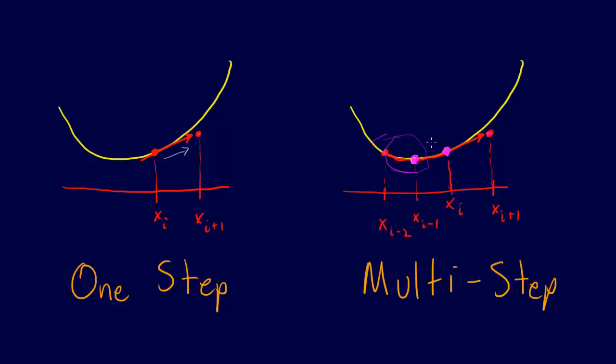And then, of course, we still do the predictor-corrector iteration, but this is the critical difference between the regular self-starting methods and the non-self-starting methods.